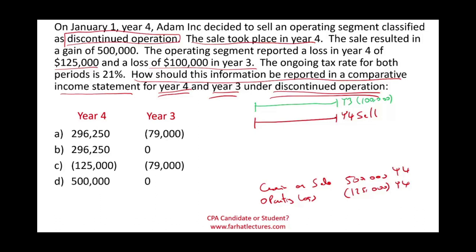The ongoing tax rate for both periods — Year 3 and Year 4 — is 21%. So the question is: how should we present this information in a comparative income statement for Year 4 and Year 3? We need to be careful here because we are presenting both years comparatively.